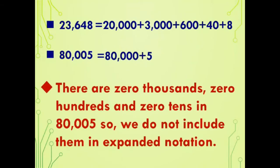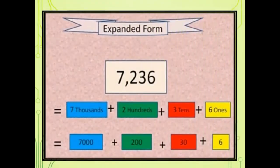There are 0 thousands, 0 hundreds, and 0 tens in 80,005, so we do not include them in the expanded notation. Next example: 7,236. 7 is in thousands place, 2 in hundreds place, 3 in tens place, 6 in ones place. So we write it in expanded notation form as 7,000 + 200 + 30 + 6.